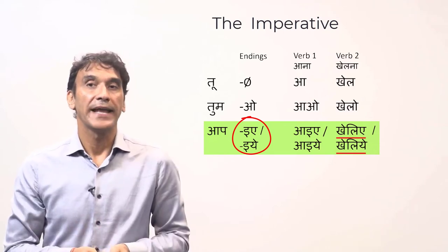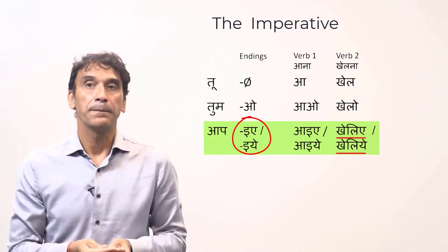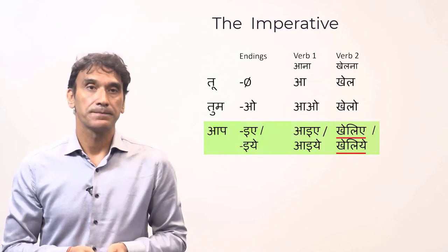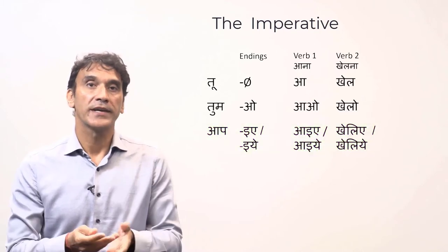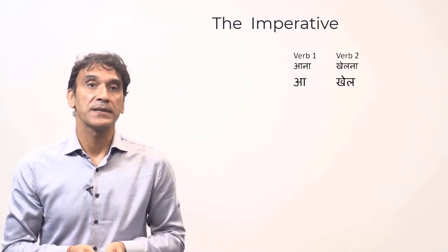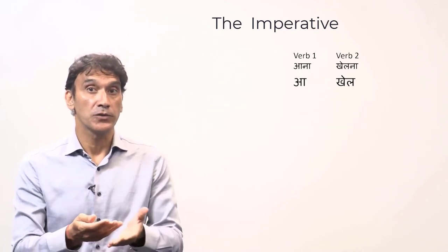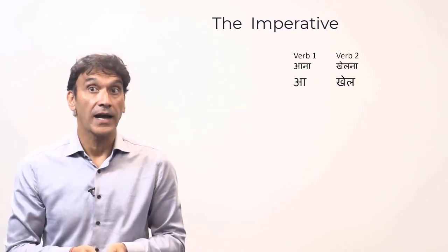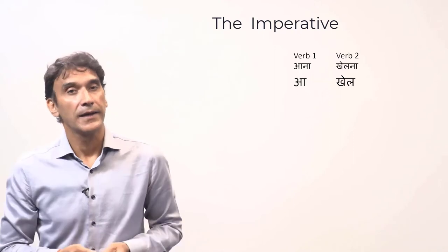Verb two has the root 'khel' — simply add the ending '-iye' to get the imperative form 'kheliye' (please play). So in these two examples, 'aana' and 'khelna' illustrate the two root types.